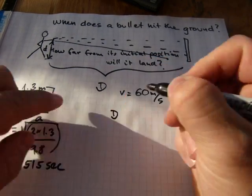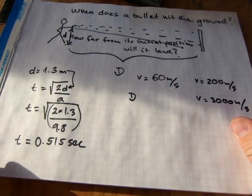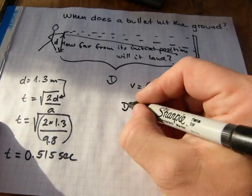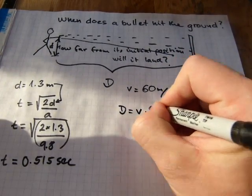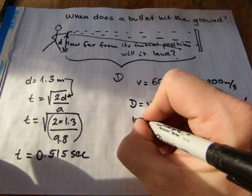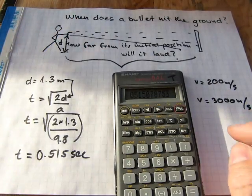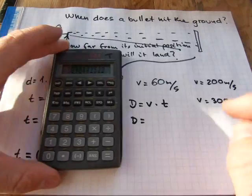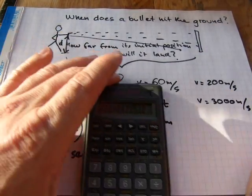What you need to do to get the big distance, the capital D, just to differentiate from the lowercase d, is: the distance where it's gonna hit the ground equals speed times time, which is very simple. There are all the digits for the time multiplied by 60, equals 31 meters in this case.